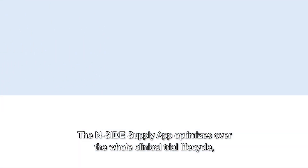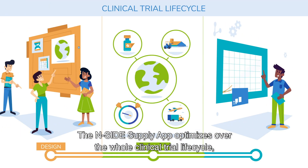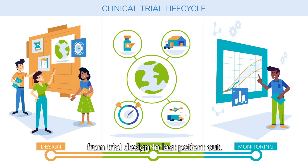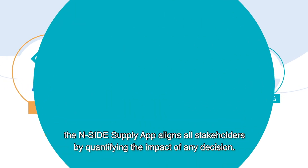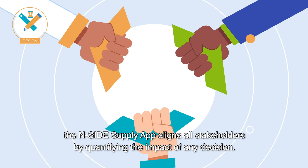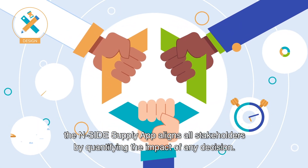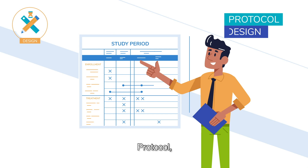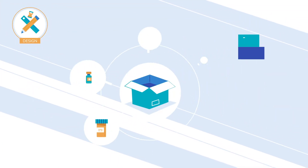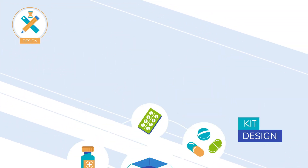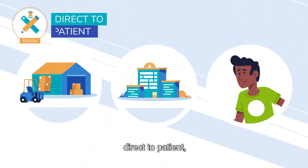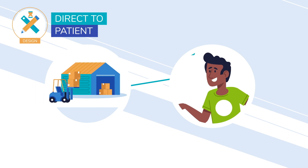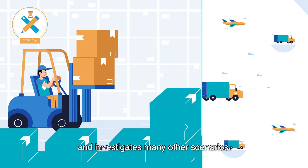The N-SIDE Supply app optimizes over the whole clinical trial lifecycle from trial design to last patient out. During the design of a clinical trial, the N-SIDE Supply app aligns all stakeholders by quantifying the impact of any decision — protocol, kit design, network and country selection, direct-to-patient — and investigates many other scenarios.